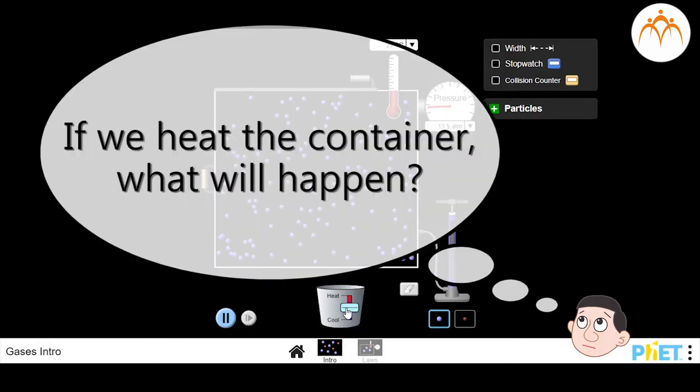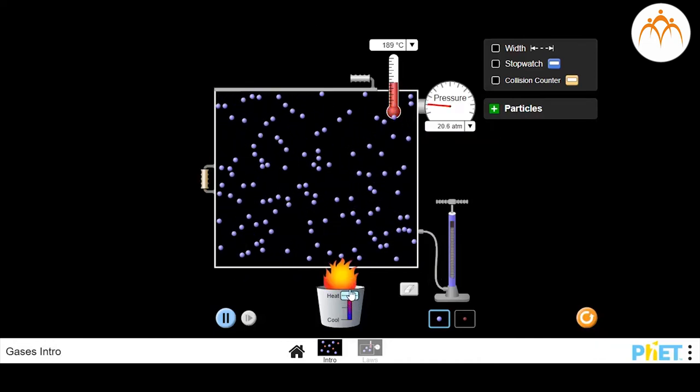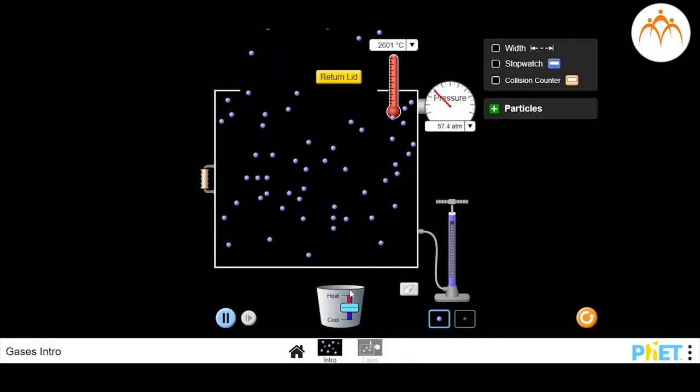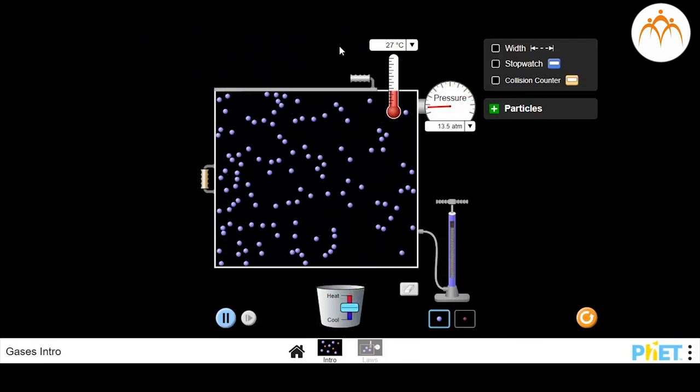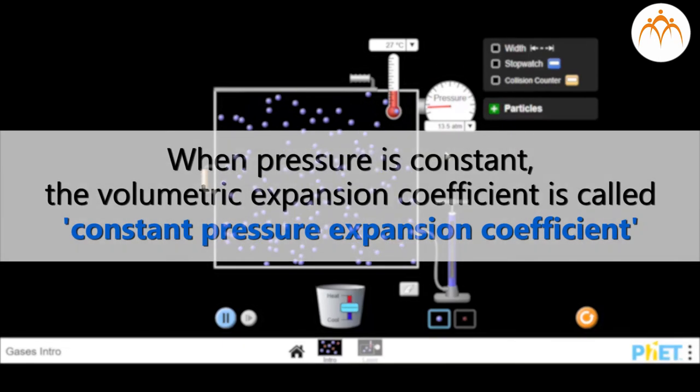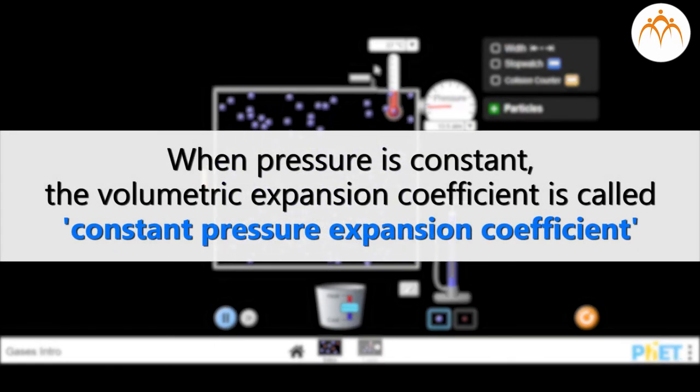If I heat the container, what will happen? Pressure will increase and eventually lid will be blown away. Expansion of gas can be measured by keeping its pressure constant. This volumetric expansion coefficient is called as constant pressure expansion coefficient.